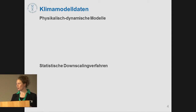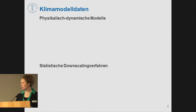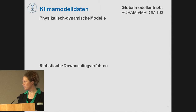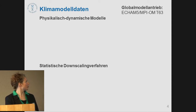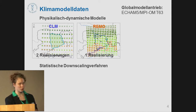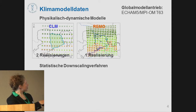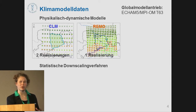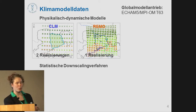Looking at the climate model data, we have physical dynamic models and also statistical downscaling approaches. With the same forcing — HM5 is the base model — I used CLM and Remo with different spatial resolutions. This area is the RECLAM model region, which is the heart of my presentation because I have both model data and observation data for this limited area.